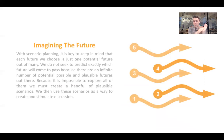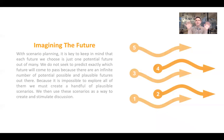So it's ultimately imagining the future. With scenario planning, it's key to keep in mind that each future we choose is just one potential future out of many. We're not trying to predict things, because it's impossible to explore all the different ways the future could unfold. What we are doing is trying to understand our underlying assumptions — what are the most important factors, and if we adjust those, what would happen? What kind of world would we end up in?